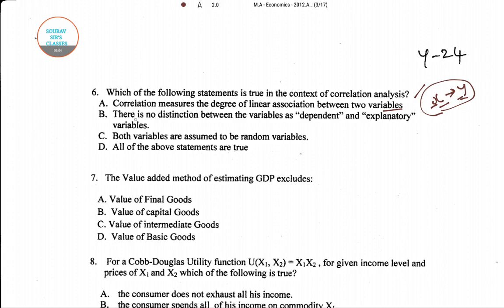The second option is there is no distinction between variables as dependent and explanatory variables — that is, no distinction about which one determines the other. The third option is both variables are assumed to be random variables. The fourth option is all of the above are true.